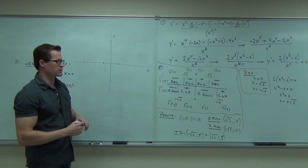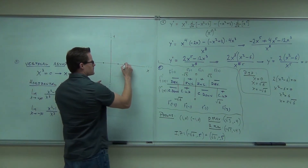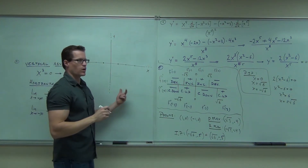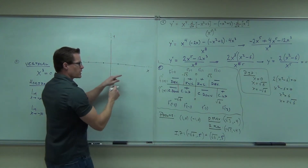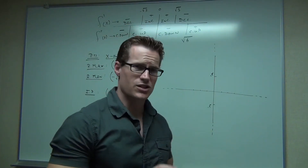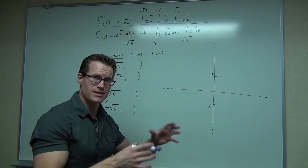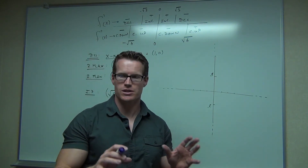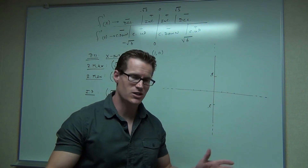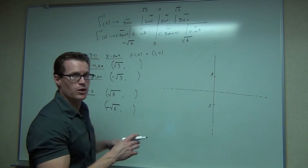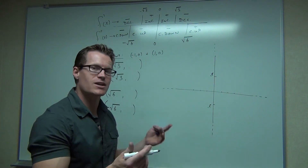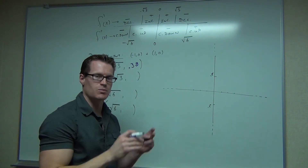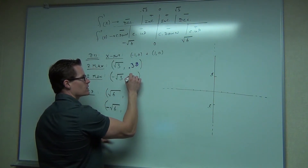Your relative max and relative min occur at square root of 3, which is about 1.7. There's a slight error from class — the numbers some students gave were a little off. Here are the correct numbers. When you take the square root of 3 and plug it into the original equation, you actually get 0.38. If you take negative square root of 3 and plug it into the original equation, you get -0.38.